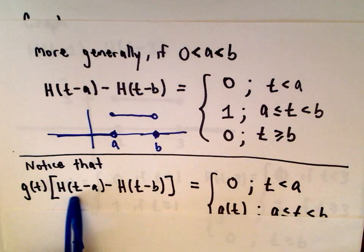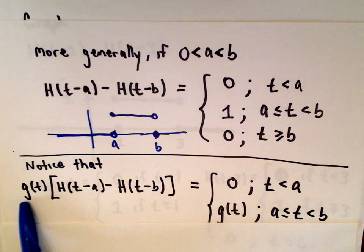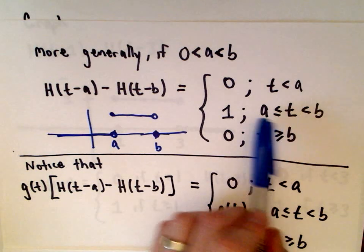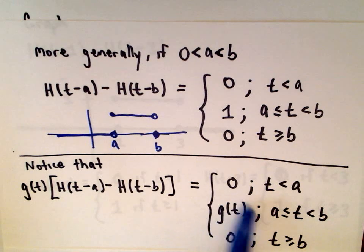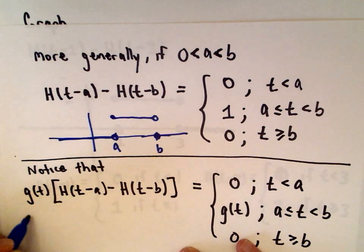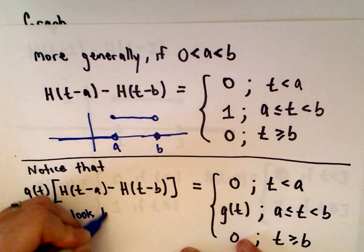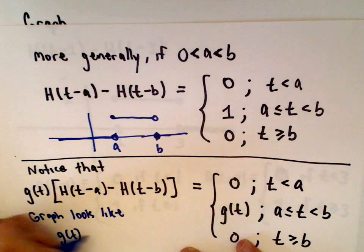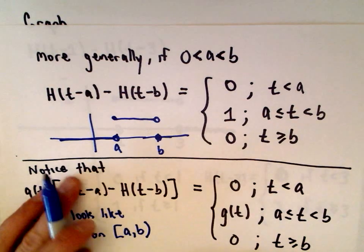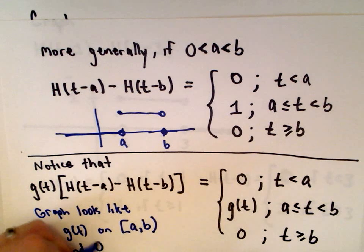Notice too: if we take this function h of t minus a minus h of t minus b and multiply it by a new function g of t, the only thing that changes is between the values of a and b. Instead of having a value of 1, it's going to look like the function g of t. The graph will look like g of t on the interval from a to b — closed at a, open at b — and zero everywhere else.